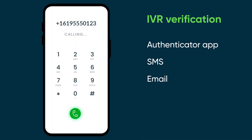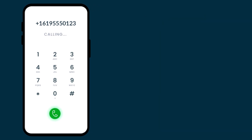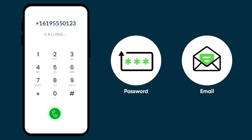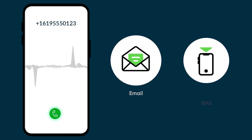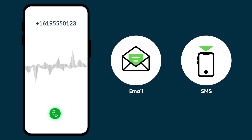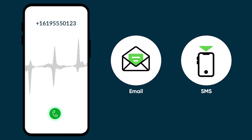With Interactive Voice Response, or IVR, a user can reset their password over the phone via authenticator apps. IVR will then send the user a user-generated password or email a URL to reset their password. The new password will then be spoken over IVR, and an email or SMS can also be sent to the user.